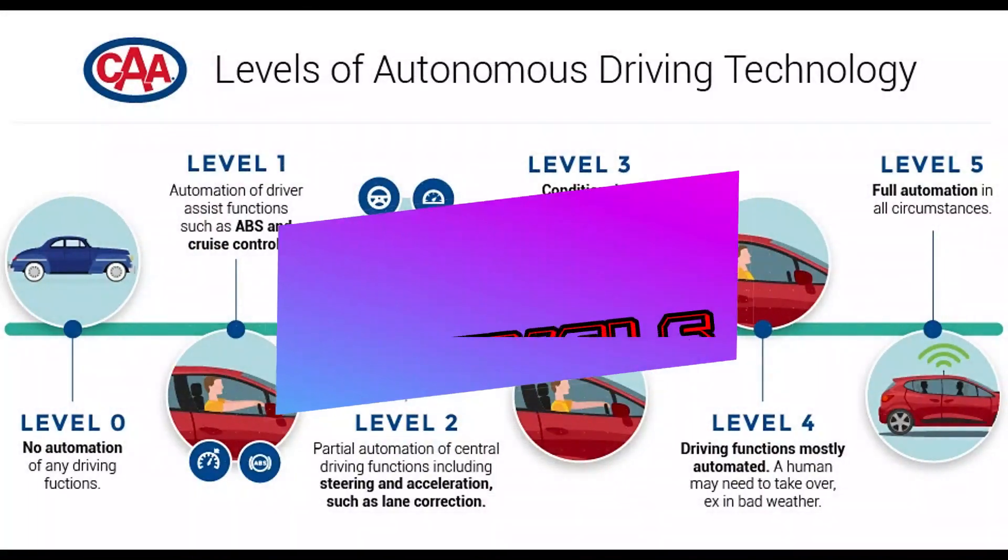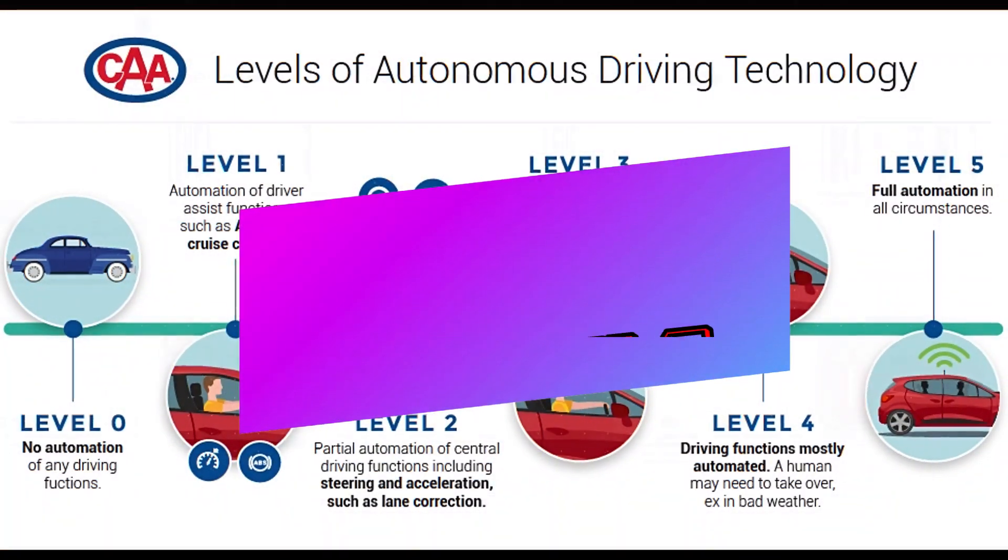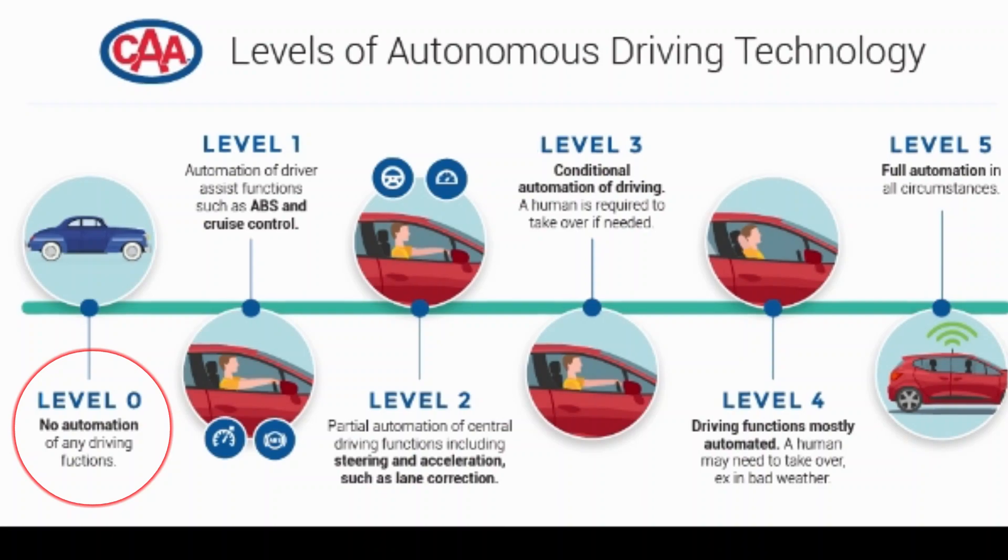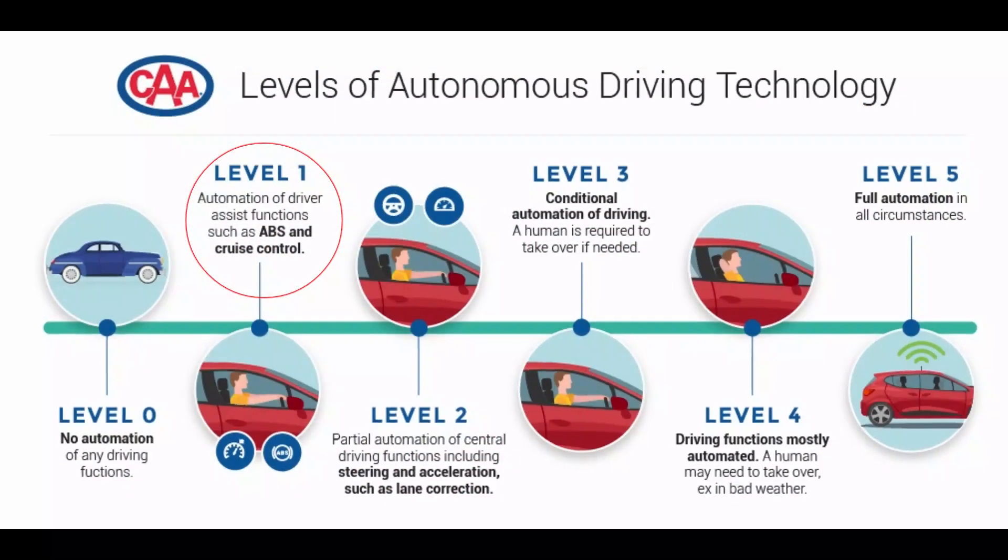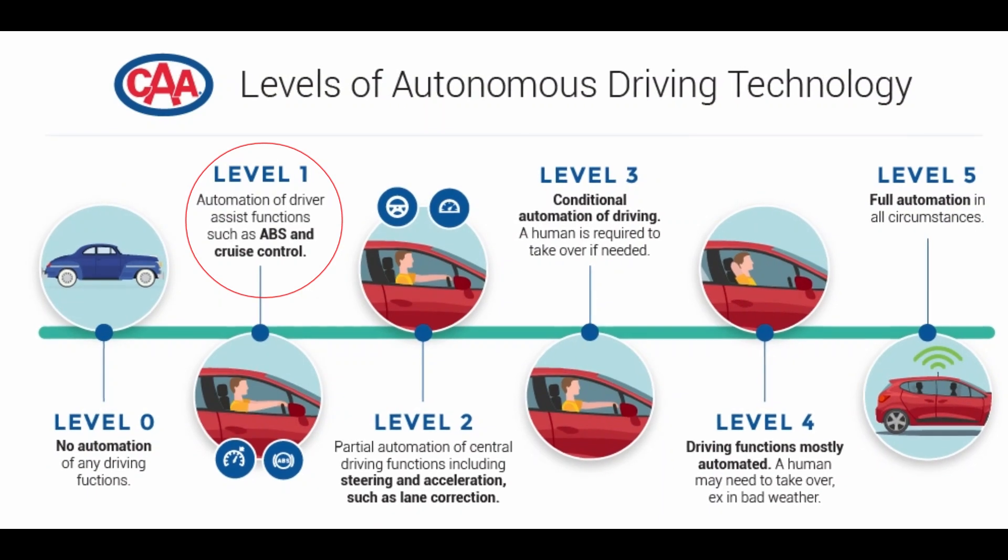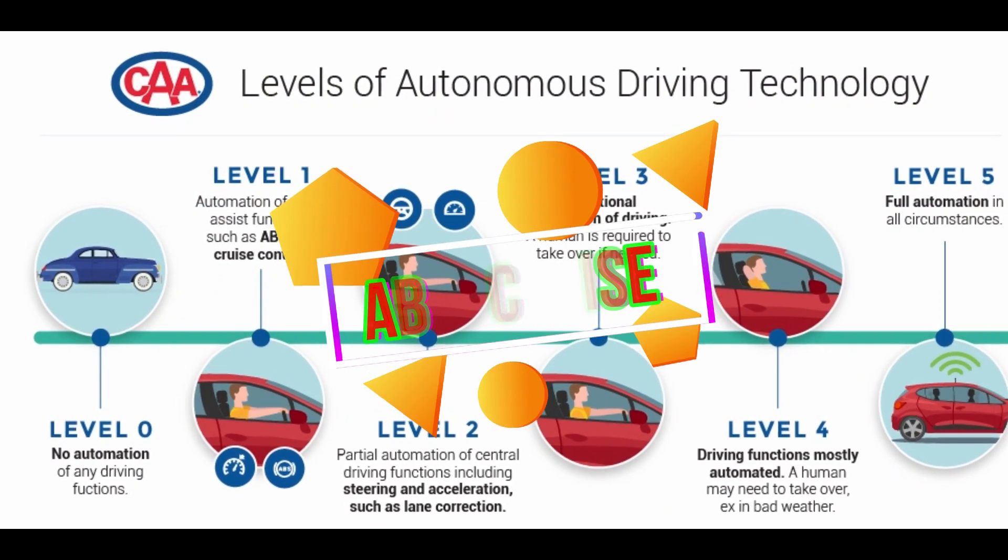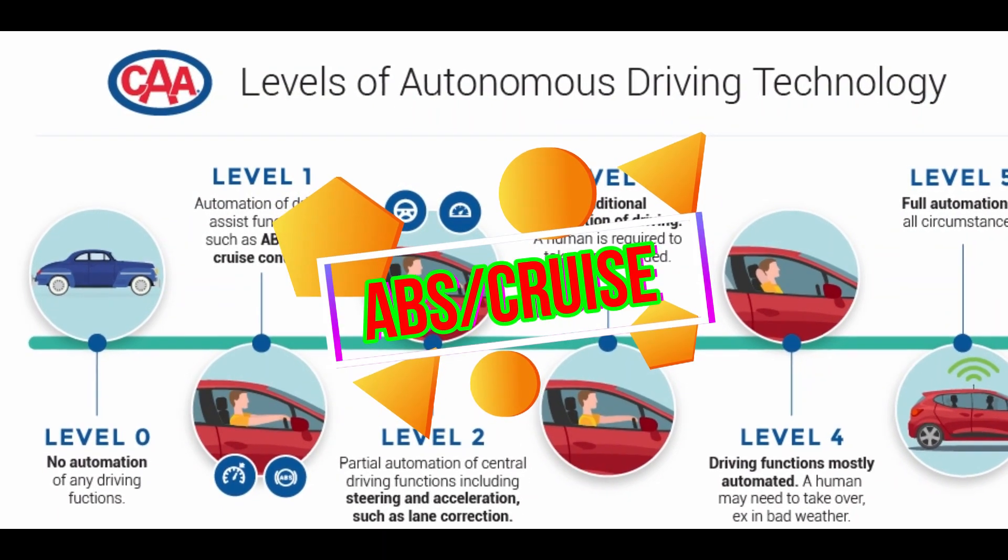We have 6 main levels in the autonomous driving technology. At level 0, there is no kind of automation whatsoever, but at level 1, we start seeing some automated assistance functions such as anti-lock brakes and cruise control.